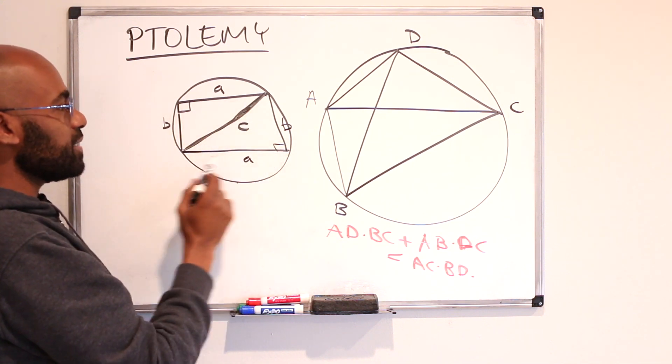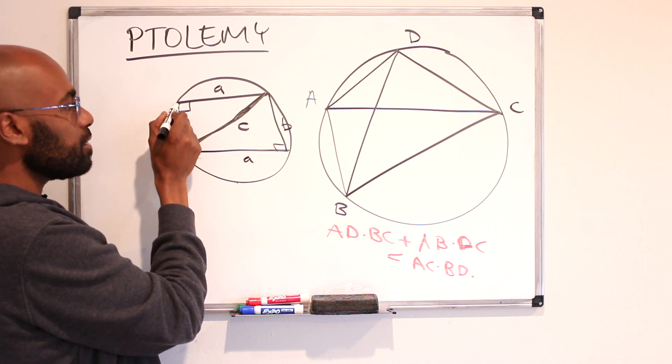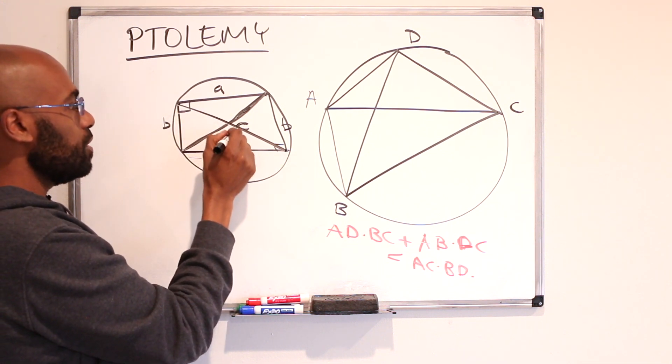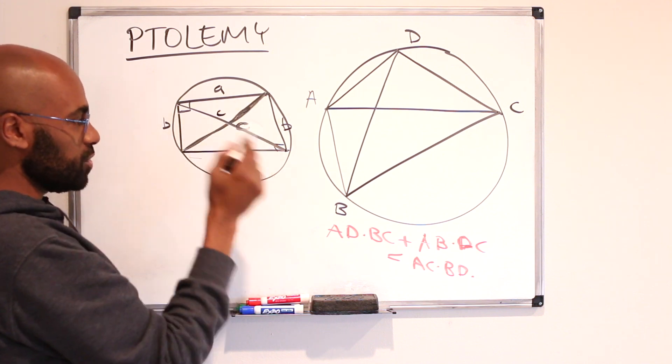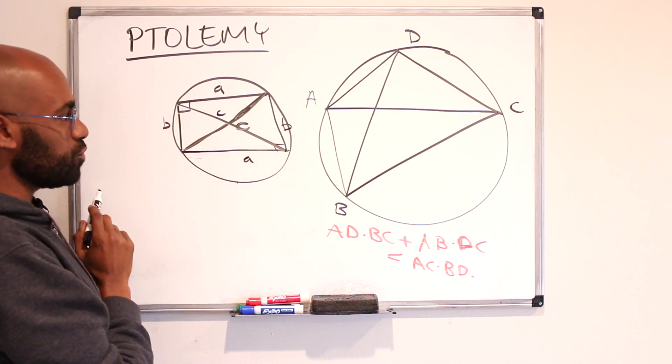So then this is a rectangle and this diagonal will also have length C because it's the same triangle as we have in our original triangle.